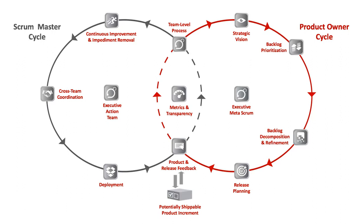The Scrum at Scale Guide: the definitive guide to Scrum at Scale — scaling that works. Version 1.05, 29th of April 2019. Copyright 2006 through 2019 Jeff Sutherland and Scrum Inc., all rights reserved. Scrum at Scale is a registered trademark of Scrum Inc., released under the Creative Commons 4.0 Attribution Share-Alike license.